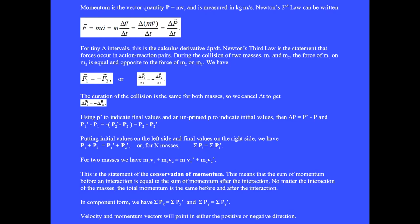In our homework we usually have two masses, so we have m1 times the initial velocity vector v1 plus m2 times the initial velocity vector v2 equals m1 times the final velocity vector v1-prime plus m2 times the final velocity vector v2-prime. This is the statement of conservation of momentum: the sum of momentum before an interaction equals the sum of momentum after the interaction, no matter the interaction of the masses.